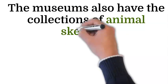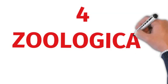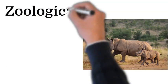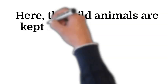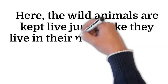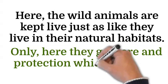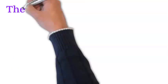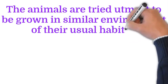Museums also have collections of animal skeletons. The next taxonomical aid is zoological parks, commonly known as zoos. Here, wild animals are kept live, just as they would live in their natural habitats, but here they get care and protection which they lack in the forest. The animals are kept in an environment as similar as possible to their usual habitat.